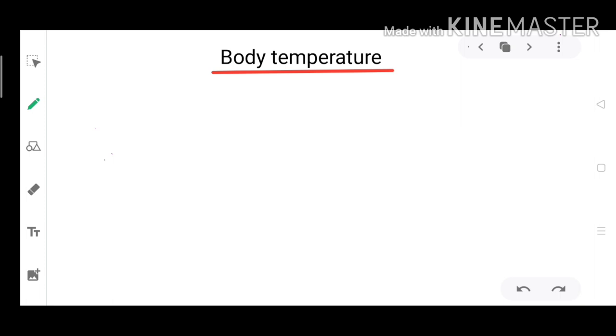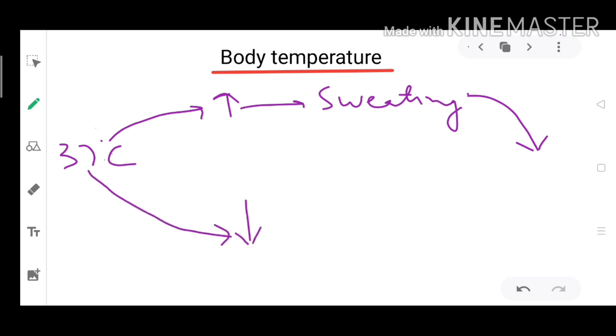Let's take few examples to understand this concept. First is body temperature. Our normal body temperature is 37 degrees Celsius. Whenever body temperature increases, body activates sweating mechanism which brings body temperature back to normal.